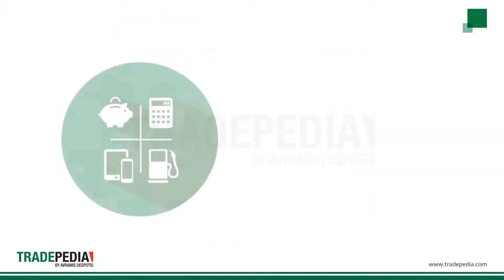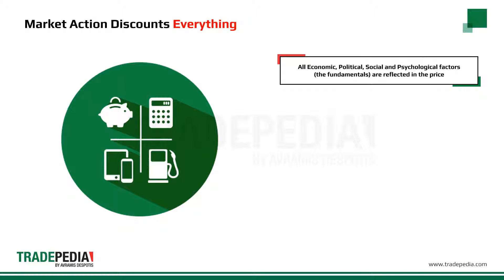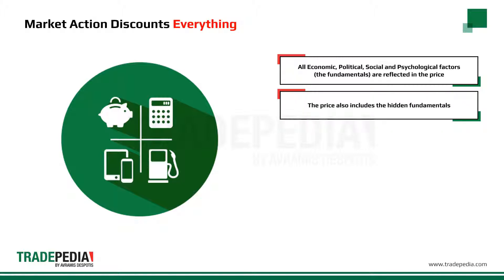The first principle of technical analysis is that market action discounts everything. This means that the price reflects all available information in the market. Everything that affects a share, currency, or commodity — such as economic, political, social, and psychological factors, which we can call the fundamentals — are reflected in the price. Furthermore, it includes the hidden fundamentals, which is information not known by all market participants.